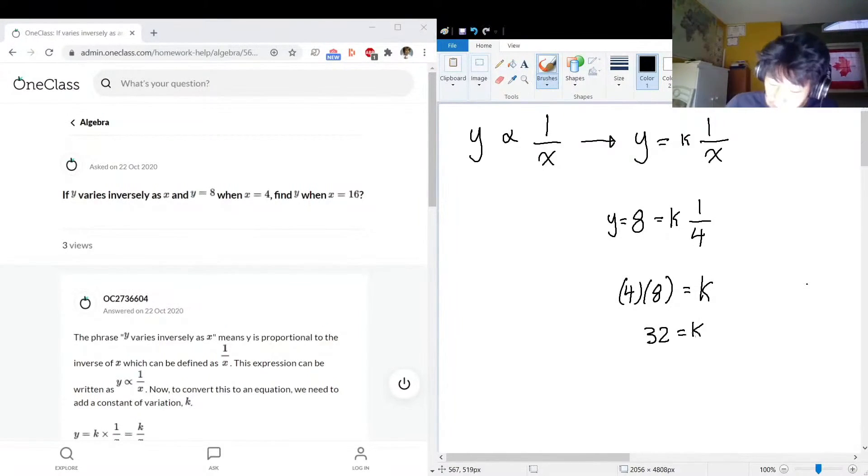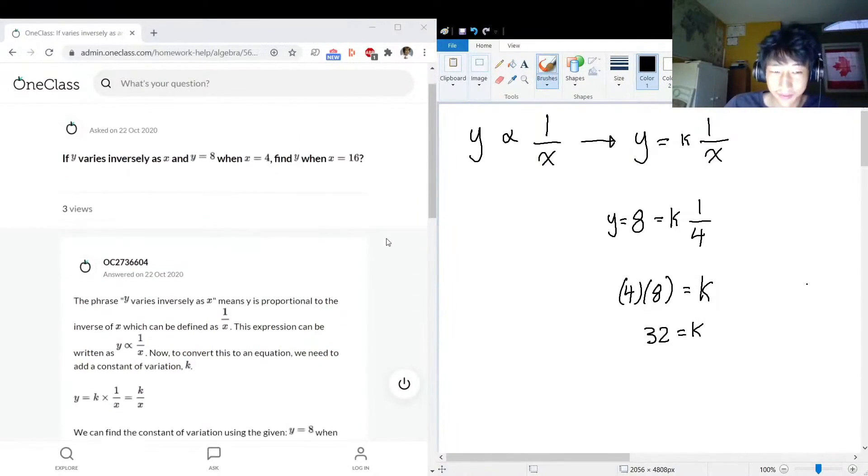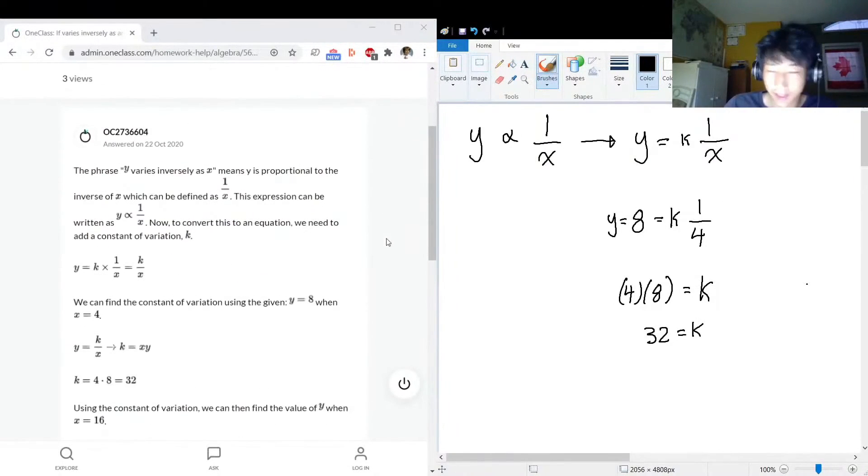That makes sense. If k is 32, that means the right side is 32 divided by 4. Yep, sounds about right. So we know what k is, so we know that y is just equal to 32 divided by x.